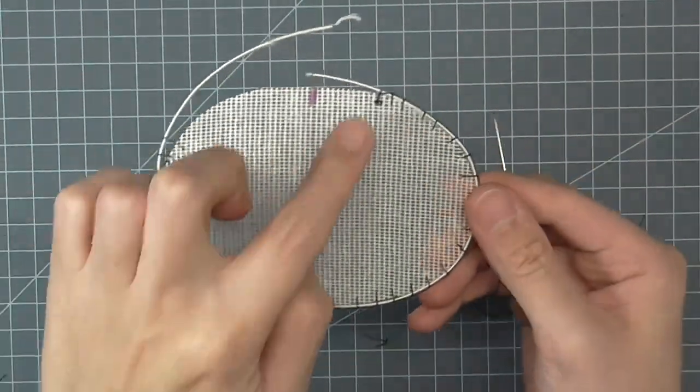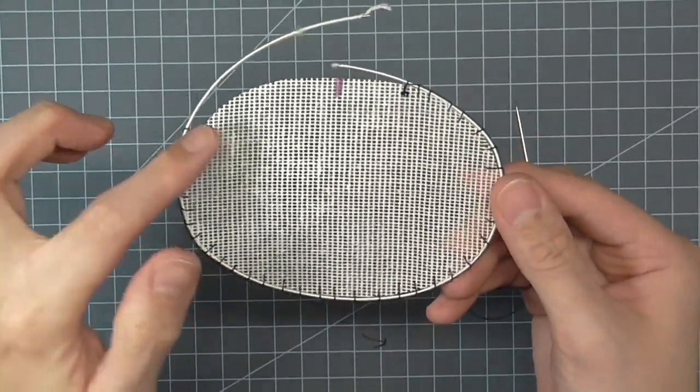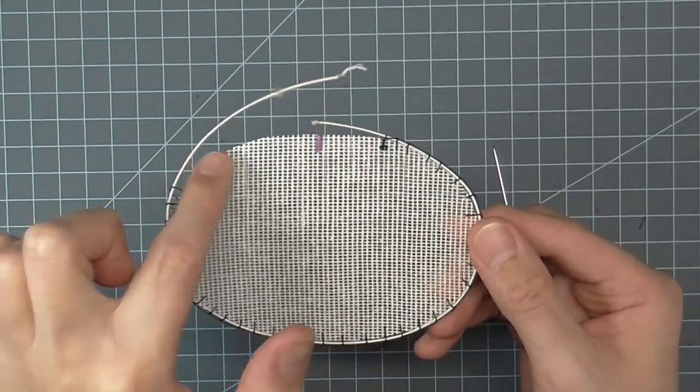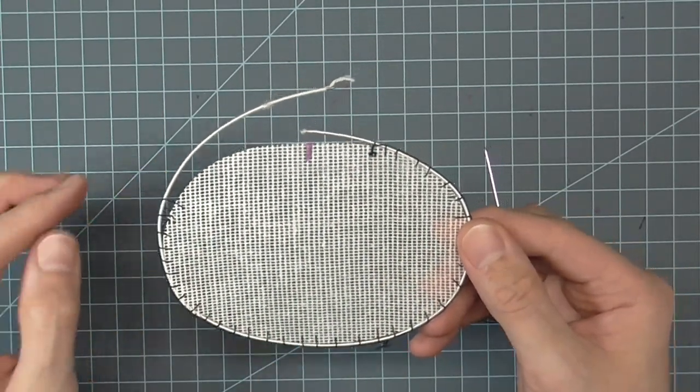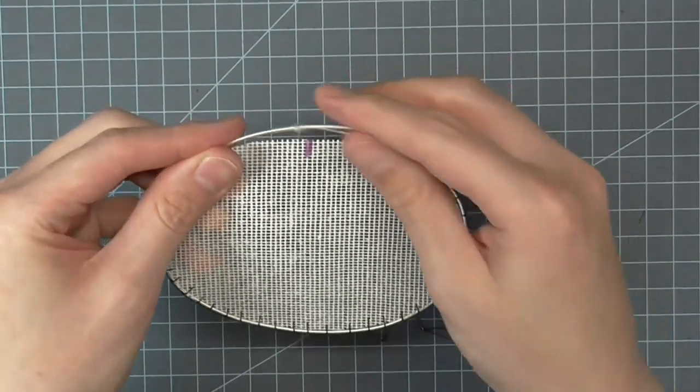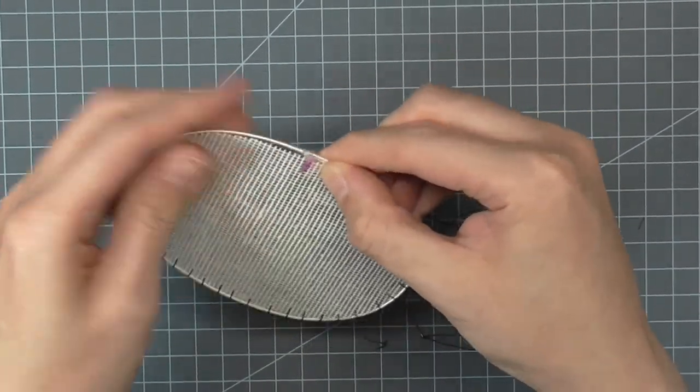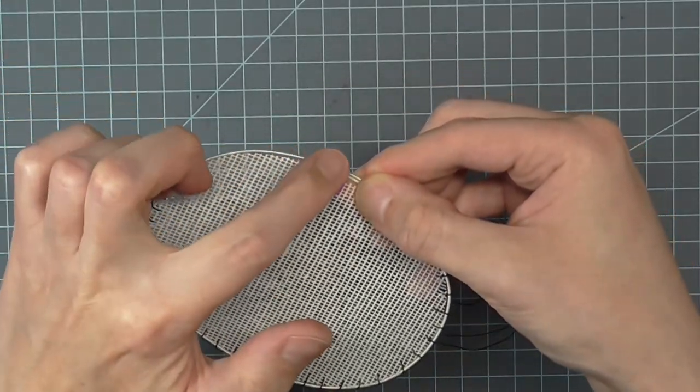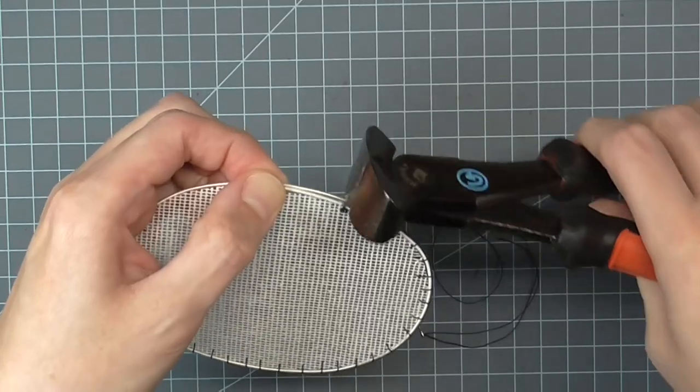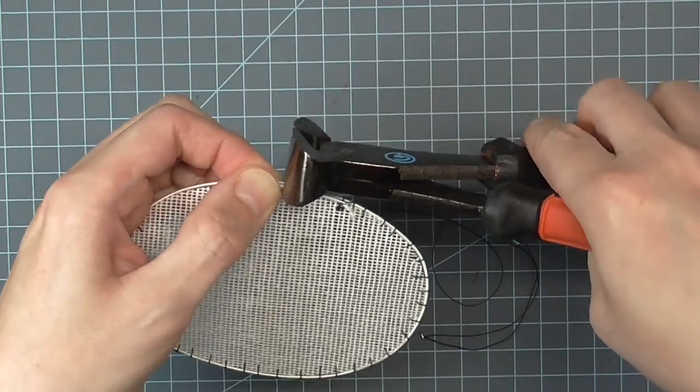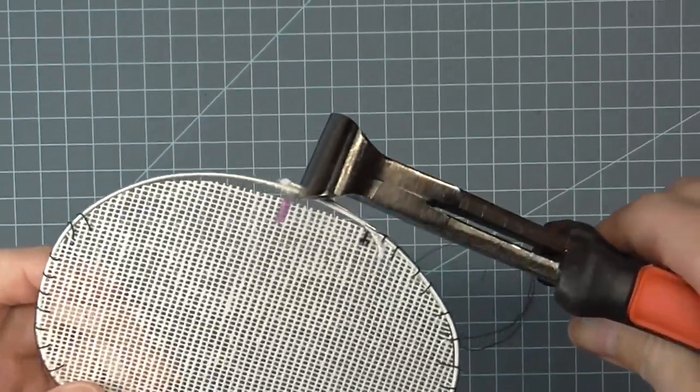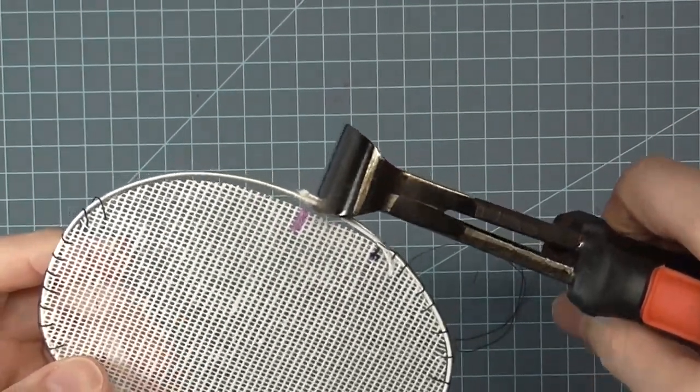Stitch the wire on until you have about a quarter of the wire left. Place the wire directly on the edge over the other wire end. With your wire cutters, cut the two ends together, being sure not to cut the buckram.